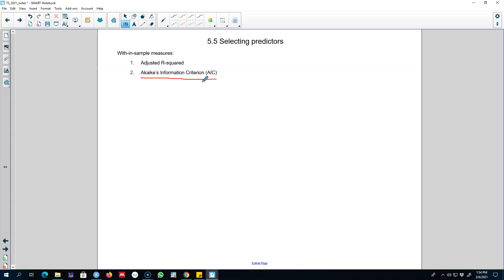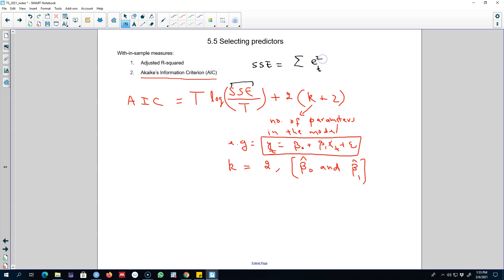We calculate AIC using this formula. SSE is calculated using this formula—these are our residuals. We're calculating the sum of these residuals, essentially the sum of squared residuals, and we divide it by T, the number of observations in our dataset. We take the log of this whole term and then add 2k plus 2.